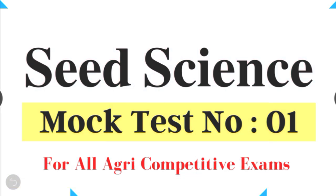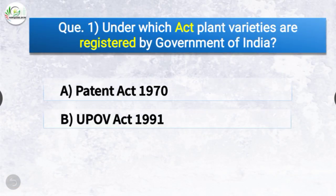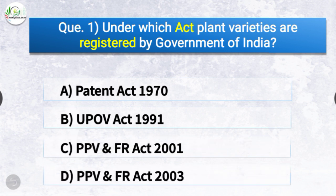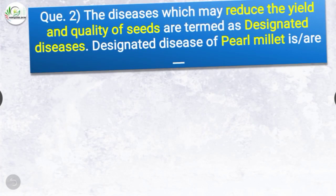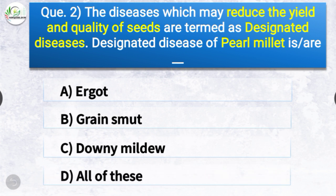Question number one: Under which act are plant varieties registered by the Government of India? The options are Patent Act 1970, UPOV Act 1991, PPV and FR Act 2001, or PPV and FR Act 2003. The correct answer is option C — Protection of Plant Varieties and Farmers Rights Act 2001. Under PPV and FR Act 2001, plant varieties are registered by the Government of India.